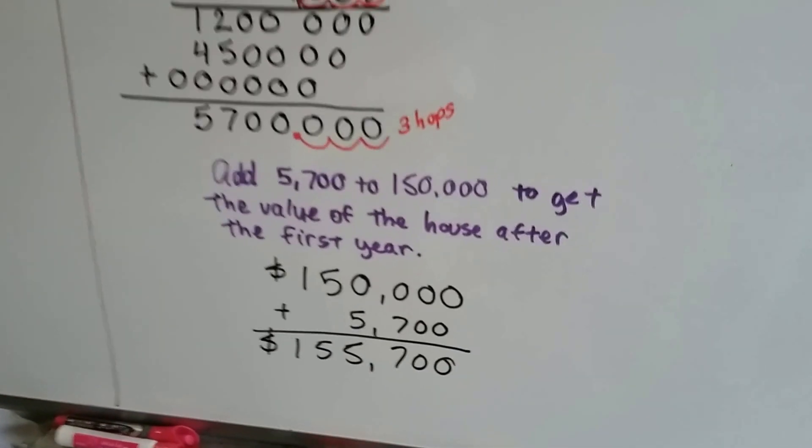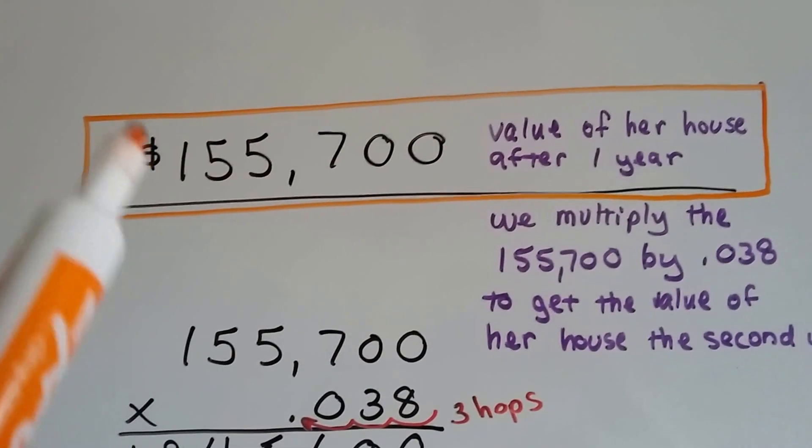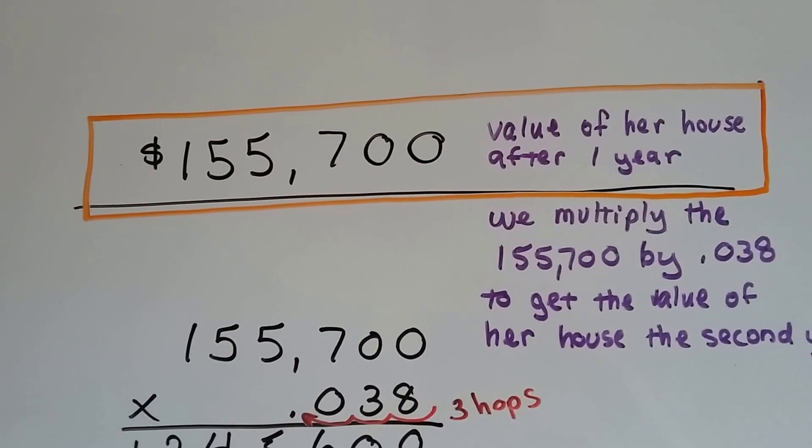So her house increased by $5,700. So now this is her new value. Now we need to multiply this again by the 0.038.